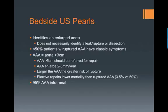An abdominal aortic aneurysm is defined as an aorta measuring greater than 3 centimeters, although greater than 5 centimeters is when we refer for repair. It's good to know that the AAA enlarges 2 to 8 millimeters per year.